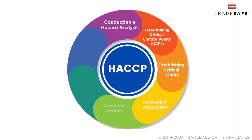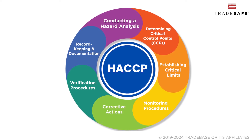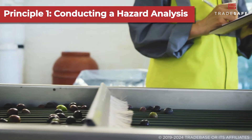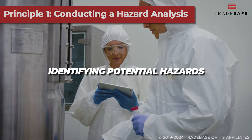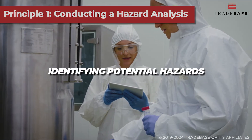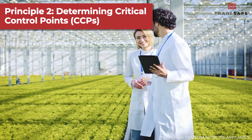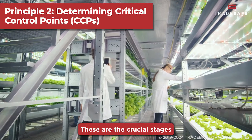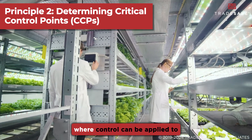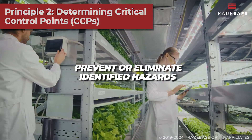Now, let's break down the seven principles of HACCP to keep products safe. First, the process begins with conducting a hazard analysis. This involves identifying potential hazards that could make food unsafe and evaluating the risks they pose. Next is determining critical control points, or CCPs. These are the crucial stages in the food production process where control can be applied to prevent or eliminate identified hazards.